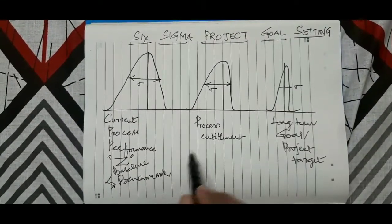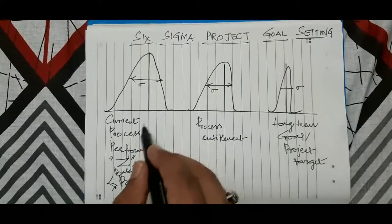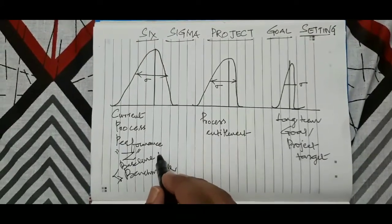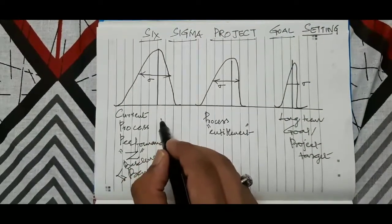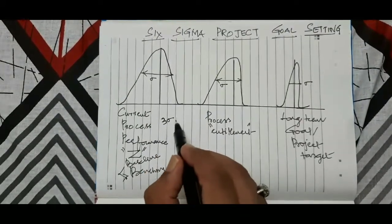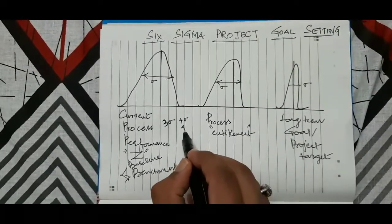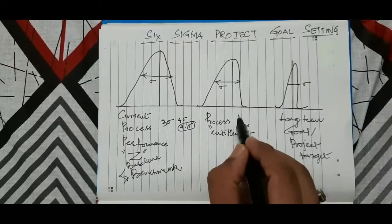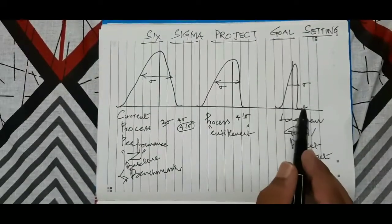In the middle, there is something called process entitlement. When we collect the baseline, the best operating performance we had is called entitlement. For example, if the current performance is three sigma, and in a few months I was able to achieve four sigma and then 4.1 sigma, then 4.1 sigma is my entitlement.